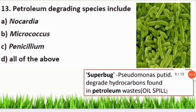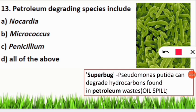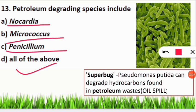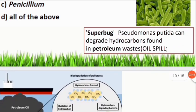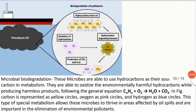Q: Petroleum-degrading species include which? A: All of the above — Nocardia species, Micrococcus, and Penicillium are used for petroleum degradation. Also remember Pseudomonas putida, known as a superbug, which degrades hydrocarbons found in petroleum and is helpful for cleaning oil spills from ships that have accidents, preventing devastating impact on aquatic organisms.